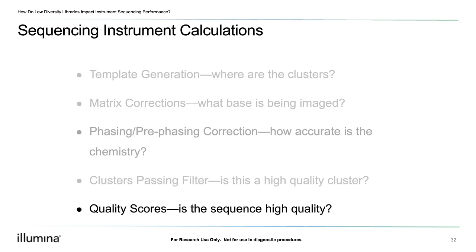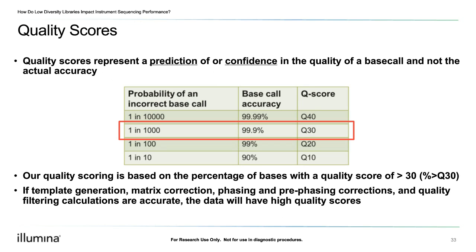We define quality scores as the probability of an error in the base call — not a measure of absolute accuracy, but an estimate of instrument confidence. A base call with a quality score of 30 has a probability of 1 in 1,000 of making an incorrect base call, so the higher the quality score, the higher the confidence and accuracy. If template generation, matrix correction, phasing and pre-phasing estimates, and quality filtering calculations are accurate, this will yield a high-quality base score. For low diversity libraries, each metric used for the Q-score calculation can be impacted, leading to a lower overall Q-score.